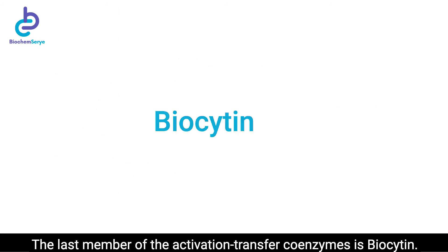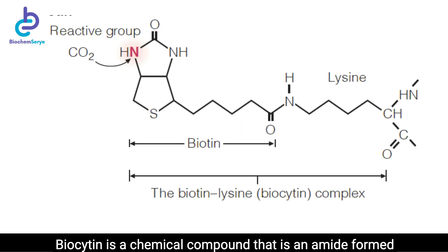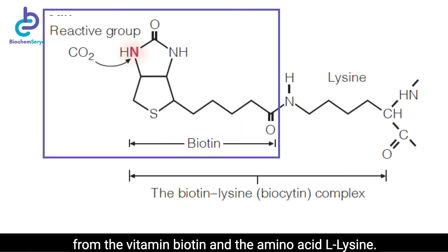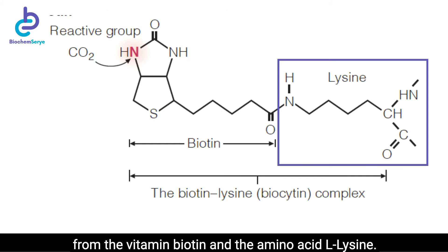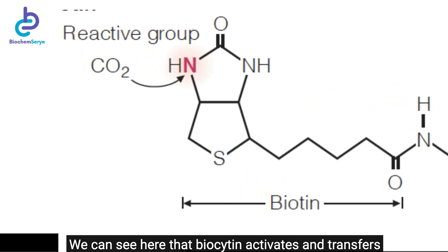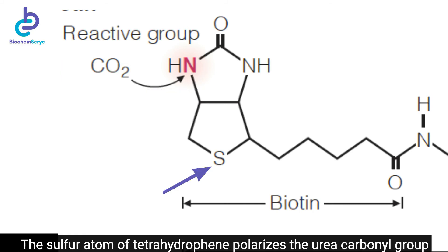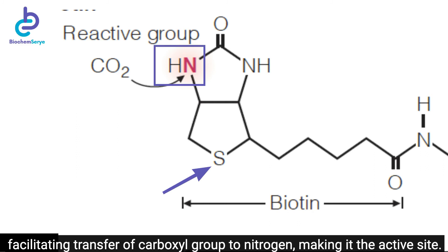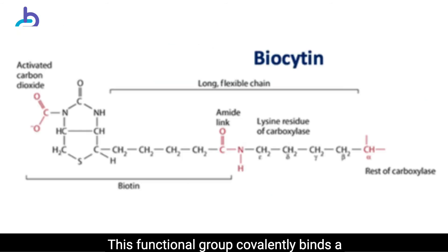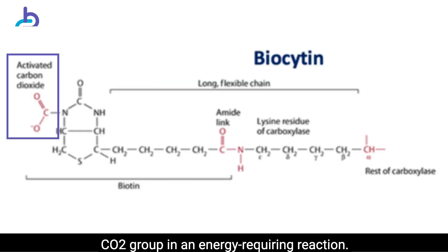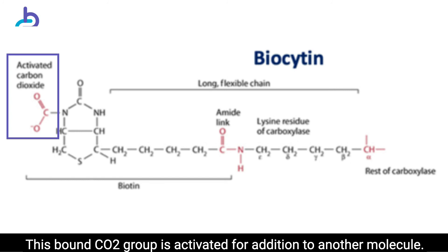The last member of the activation transfer coenzymes is biocytin. Biocytin is a chemical compound that is an amide formed from the vitamin biotin and the amino acid lysine. Biocytin activates and transfers CO2 to compounds in carboxylation reactions. The sulfur atom of tetrahydrothiophene polarizes the urea carbonyl group, facilitating transfer of the carboxyl group to nitrogen, making it the active site. This functional group covalently binds a CO2 group in an energy-requiring reaction, and this bound CO2 group is activated for addition to another molecule.